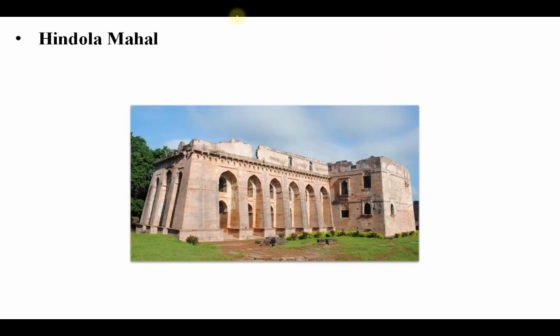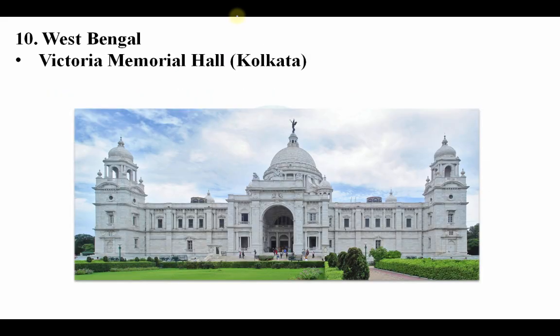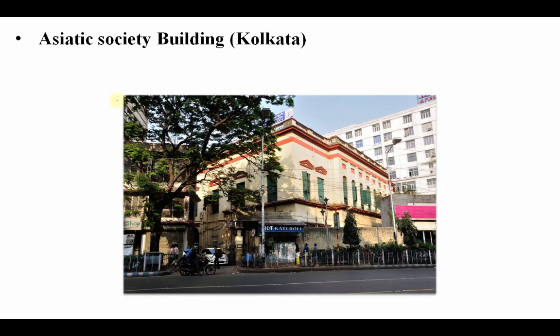Now let's go to West Bengal. First, Victoria Memorial Hall — it is in Kolkata and was made by the British. Second, the Asiatic Society Building — the Asiatic Society was made by William Jones, and the building is in Kolkata.